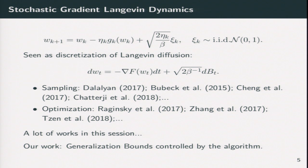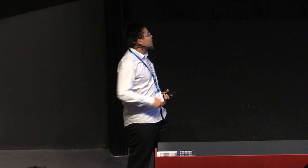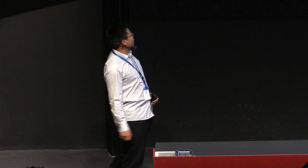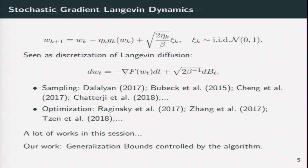So then we turn to the SGLD algorithm. There are a lot of previous talks that introduced this algorithm, and it is discretization of Langevin diffusion. So here we consider a stochastic gradient version of that. And it is widely used in sampling and optimization. If you are interested in sampling, you can refer to the previous talk. And if you are interested in its optimization property, you can see the next talk. But in this talk, we are going to focus on the generalization error,